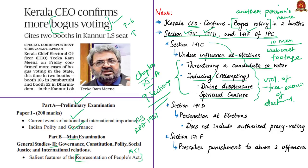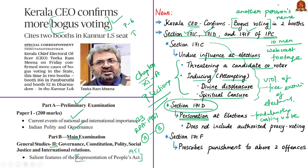Section 171D of the IPC deals with personation at elections, meaning fraudulently casting the vote of another person or voting in any other name. For example, a person A can vote only for himself; if he fraudulently votes for another person, he becomes an offender violating the electoral right of that other person and can be tried under this provision.